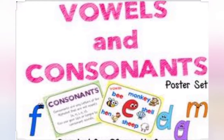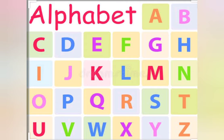Starting with our chapter which is the alphabets, vowels and consonants. Children, I told you that there are 26 letters in our English alphabets and they are written in two ways.